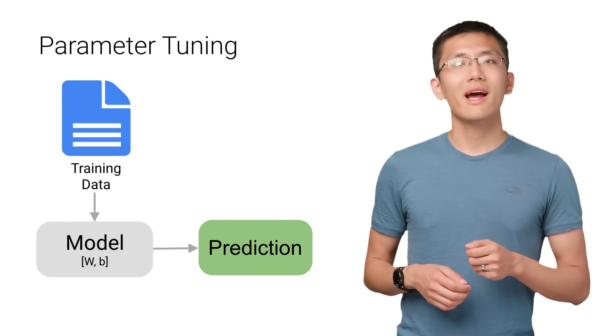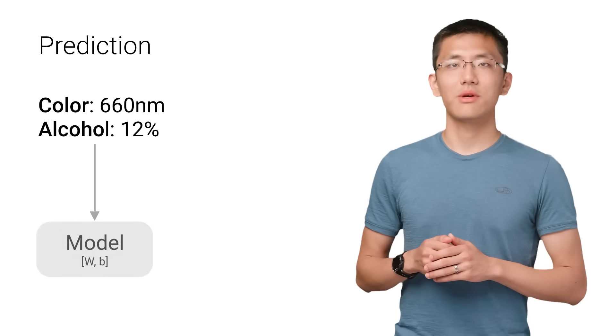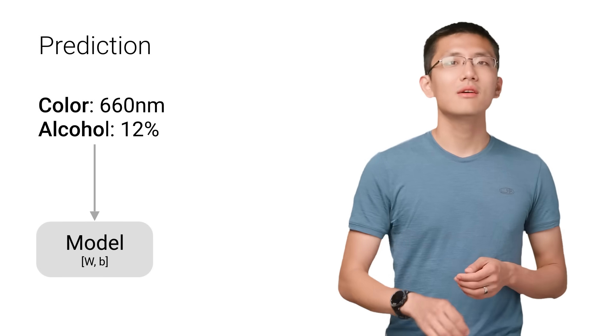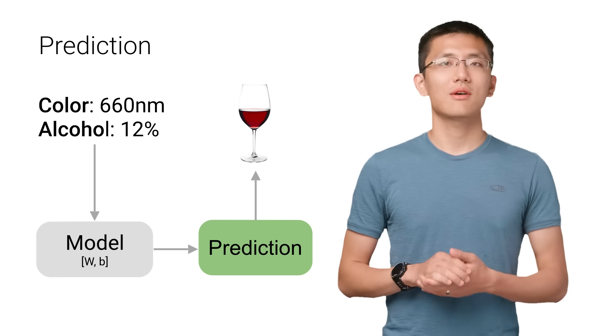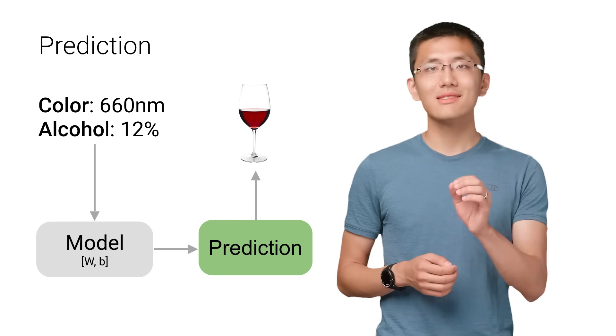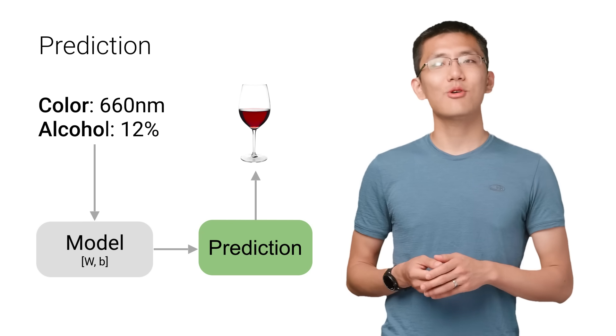Once you're happy with your training and hyperparameters, guided by the evaluation step, it's finally time to use your model to do something useful. Machine learning is using data to answer questions, so prediction or inference is that step where we finally get to answer some questions.